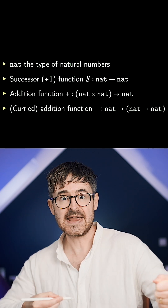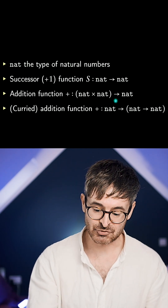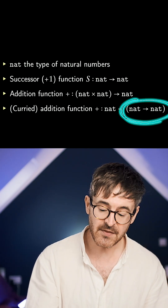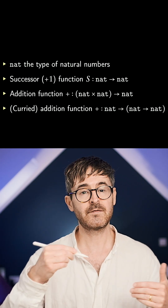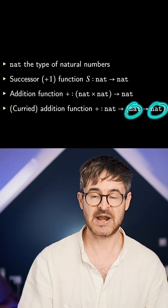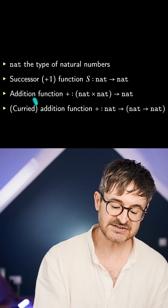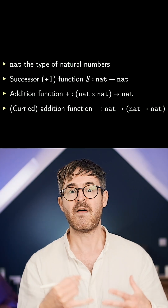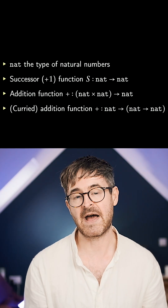But there's another way of thinking about it. We can think of it as first taking in one natural number and returning another function from a natural number to a natural number. This is sometimes called the curried form of that function.